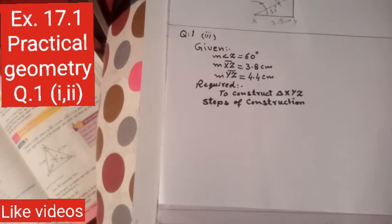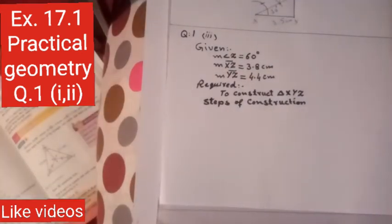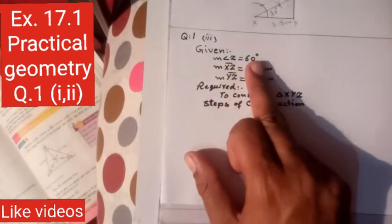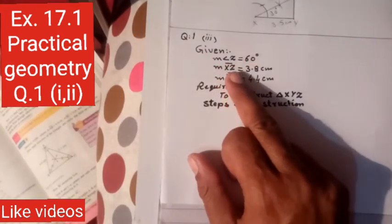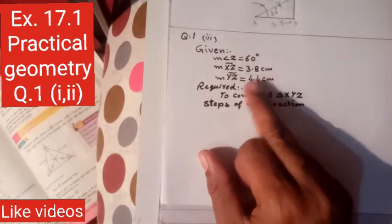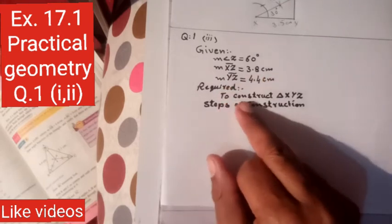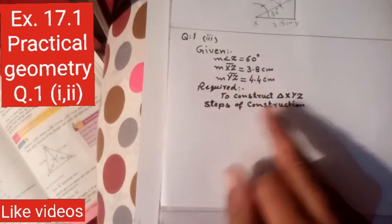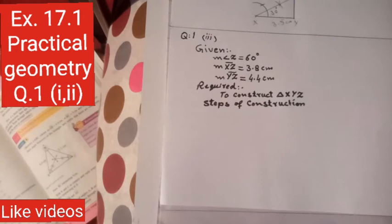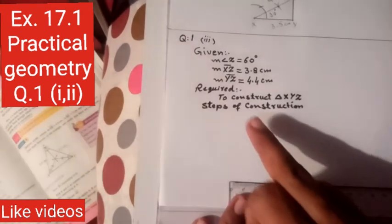Question number 1, part number 3 — same question with new given data. Angle Z is 60 degrees. XZ is 3.8 cm and YZ is 4.4 cm. We are required to construct triangle XYZ. Steps of construction.